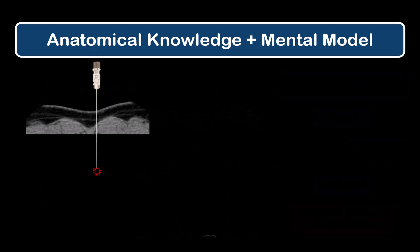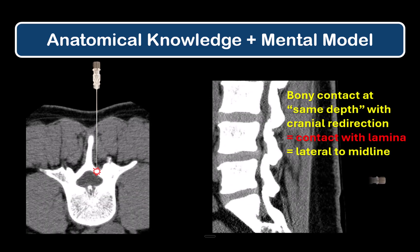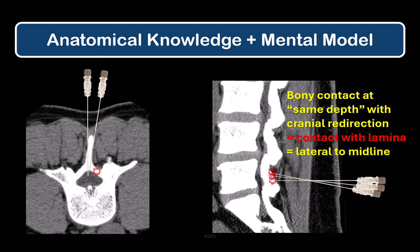If you touch bone without eliciting pain, but your subsequent cranial redirections result in bony contact at a similar depth each time — which kind of feels like you're walking your needle up a vertical wall — then this is almost certainly the lamina, and once again you're too lateral and off the midline. If you happen to know which side of the midline you're on, you could angle slightly medially, about 10 degrees, and perform a paraspinous approach. Otherwise, you'll have to do a parallel shift of your needle to find the true neuraxial midline.